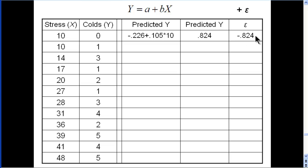So that's the error term. That's the error portion in the regression equation. It acknowledges there's some error, and it's equal in this case to negative 0.824, because the difference between the number of colds the person experienced and what we predicted based on the regression equation is equal to this.